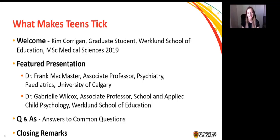Dr. Frank McMaster is an associate professor in psychiatry and pediatrics, and he does a lot of really interesting neuroimaging research at the Alberta Children's Hospital. His research focuses on neurodevelopmental disorders and mental health in child and adolescence. And we have Dr. Gabrielle Wilcox, who is an associate professor in the School and Child Psychology program in the Werklund School of Education. And she does a lot of really cool research on educational neuroscience, adolescent mental health, and research on transition periods from high school to university for adolescents. And both of them have their own teenagers at home, so they have a lot of first-hand experience.